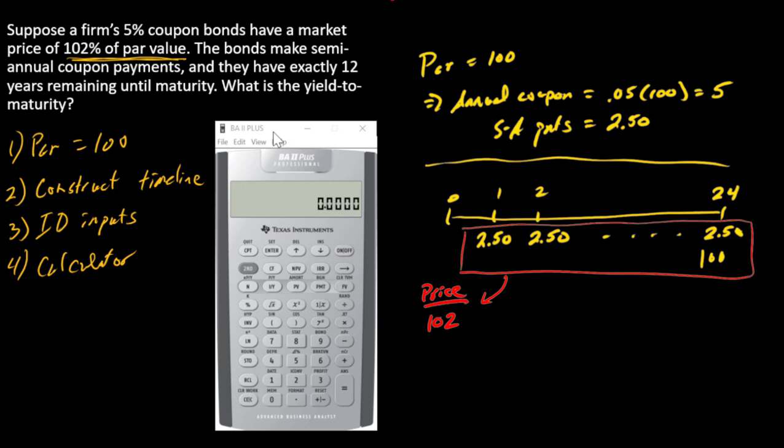All right, so what's the yield to maturity? So the yield to maturity equals discount rate that sets PV of the cash flows equal to the price.